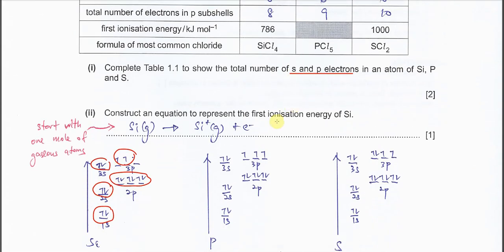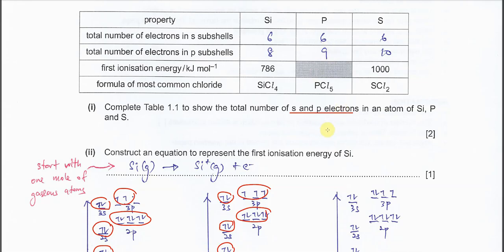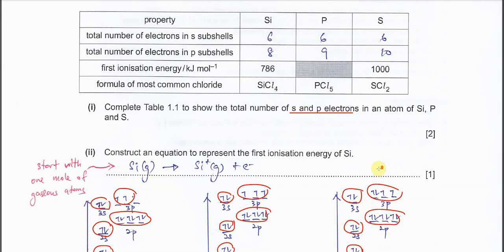Phosphorus: 1s, 2s, 3s, total 6 s electrons. For p electrons, 6 plus 3 equals 9. For sulfur, the s electrons total is 6, and p electrons are 6 plus 4, equals 10.